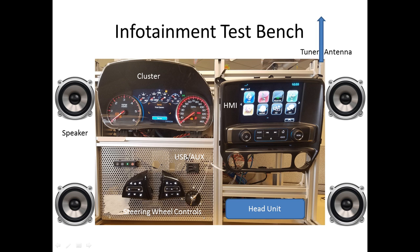By information we mean things like navigation, traffic announcements, emails, and text information available from a connected mobile device. By entertainment we mean multimedia devices, multimedia services, and internet services. So the infotainment system provides both information as well as entertainment.